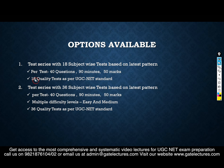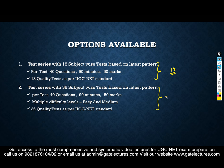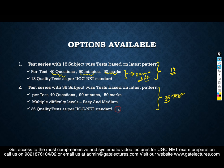There are two package options. The first is 18 quality tests, suitable for people who want a smaller set. The second option is 36 tests. Every test is 40 questions, 90 minutes, and 50 marks. The 18-test package has a single difficulty level, while the 36-test package has two difficulty levels: easy and medium.